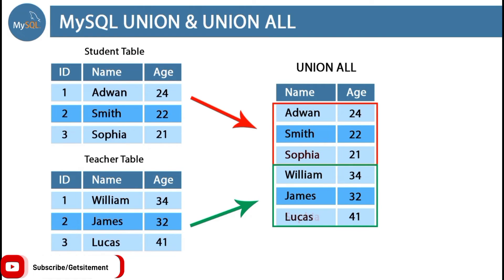Suppose we have a student named Sophia and also we have a teacher named Sophia. Then it's going to handle the duplicate name differently depending on the operator. If we use only UNION, it does not return duplicate records. But if we use UNION ALL, it is going to return the duplicate records.